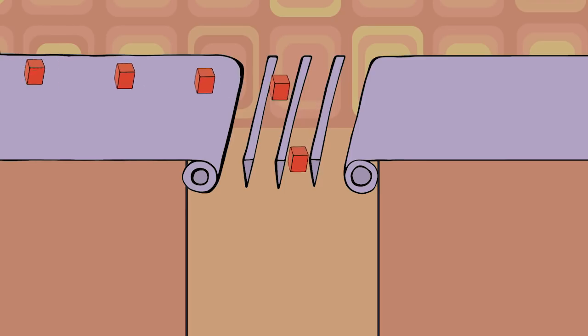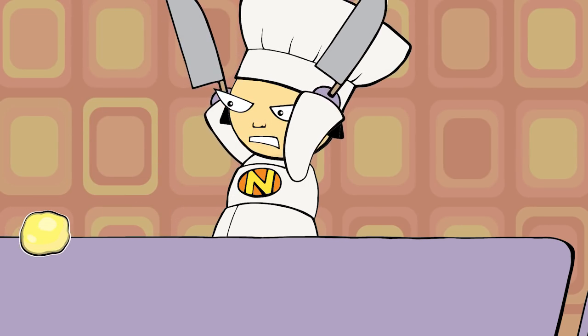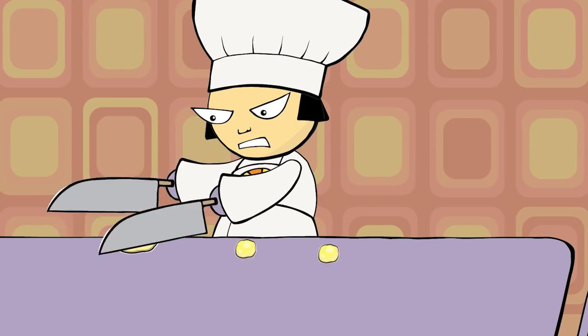Before any of the nutrients reach the bloodstream, they have to pass through tiny security filters that protect the ship. So a crew member we'll call Chef Chop Chop breaks the food into tiny bits.